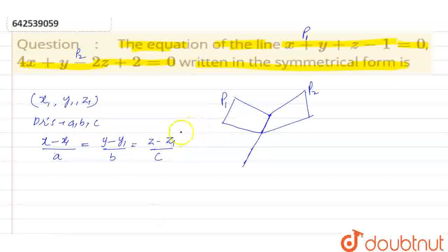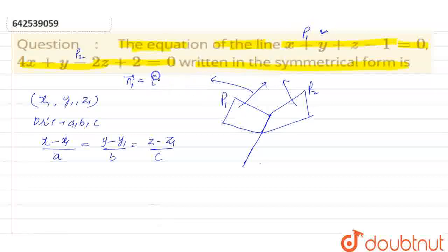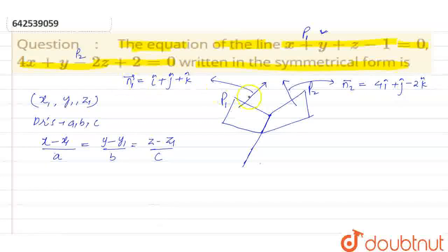First, we will try to find out the direction ratios of the line. These are the vectors normal to the planes P1 and P2. The normal vector n1 to plane P1 is i plus j plus k, and the normal vector n2 to plane P2 is 4i plus j minus 2k. These two normal vectors are also perpendicular to this line, because the line lies in both planes. So any vector parallel to this line is basically n1 cross n2.